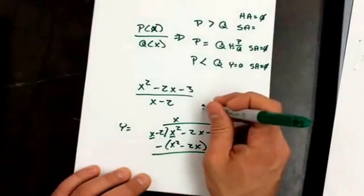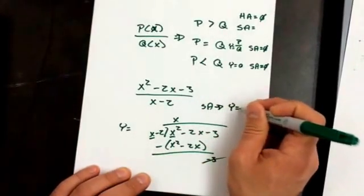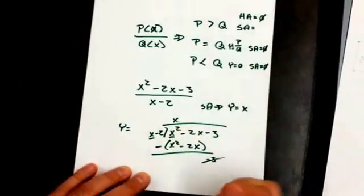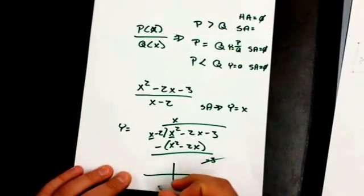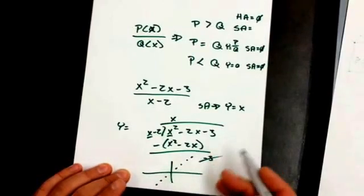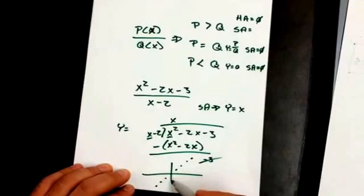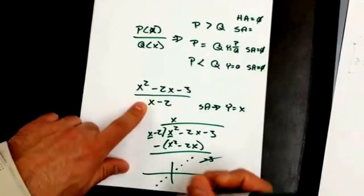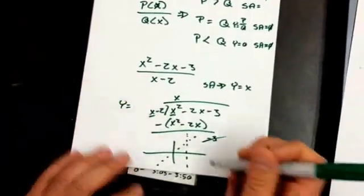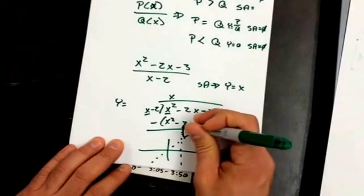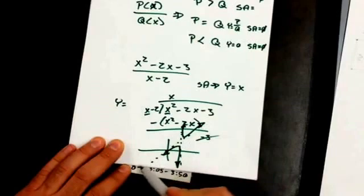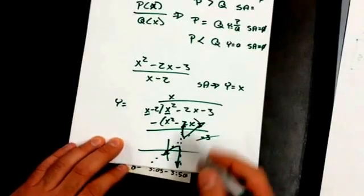The remainder doesn't matter, so I just get rid of it. That means I have a slant asymptote at Y equals X. The slant asymptote is a line that the graph gets very close to — it's never going to quite reach it, but it gets really close to Y equals X. I also have a vertical asymptote at X equals 2. So the graph is going to go like this on either side of it — it's slanted instead of being a horizontal asymptote, and that's the difference.